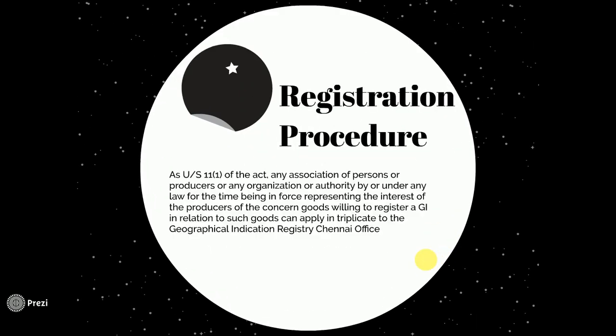Registration procedure: As under Section 11, Subsection 1 of the Act, any association of persons or producers, or any organization or authority under any law for the time being enforced, representing the interest of the producers of the concerned goods and willing to register a GI in relation to such goods, can apply to the Geographical Indication Registry, Chennai office. For example, suppose there are people at Varanasi who are dealing in manufacturing of Banarasi sarees — if they form one association, they can apply for getting a GI at the Geographical Indication Registry, Chennai office. The form has to be filled in three copies.